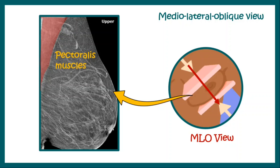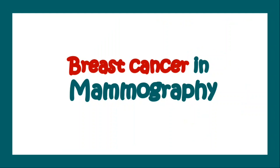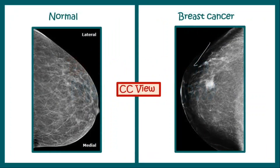Now let us see how mammography is used to study breast cancers. In a cranio-caudal view, on the left hand side we have the normal breast, while on the right hand side we have a breast which shows a dense irregular mass and signs of microcalcification. These two findings are very characteristic of breast cancer.